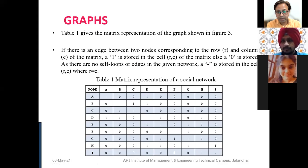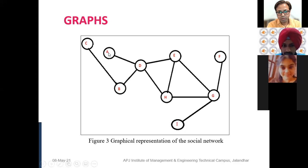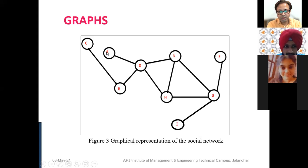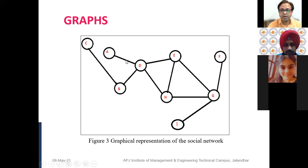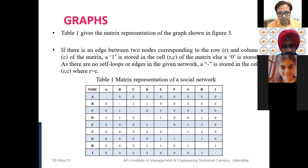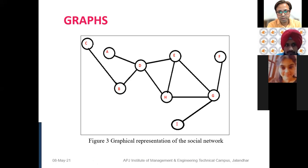Graphs can be better understood if we create a matrix for a given graph. If I have a graph with nodes labeled A to I, and there is an edge between any two nodes, we write a 1 in that position of the matrix. The nodes are labeled A, B, C, D, E, F, G, H, I. If there is an edge between two nodes we write 1; otherwise we write 0.